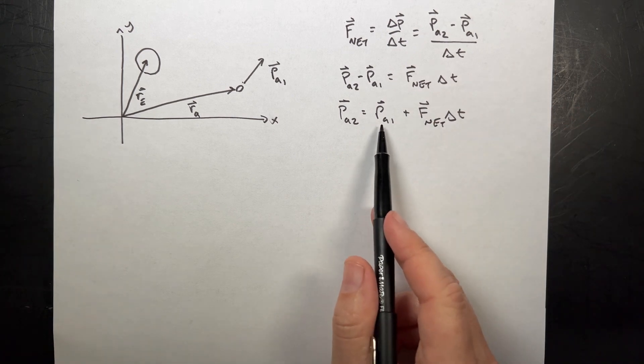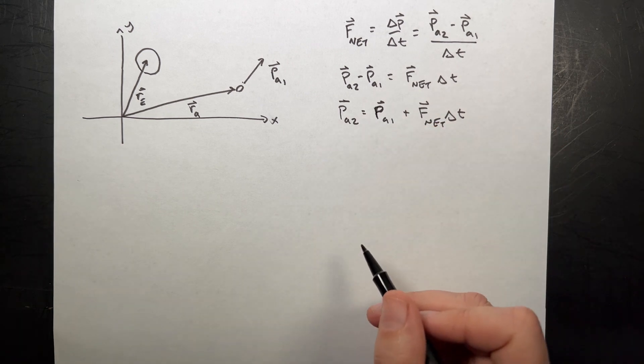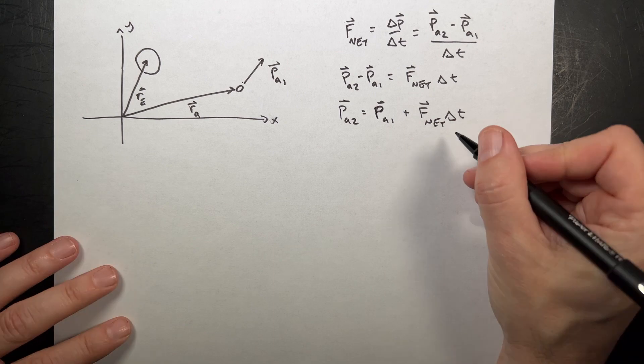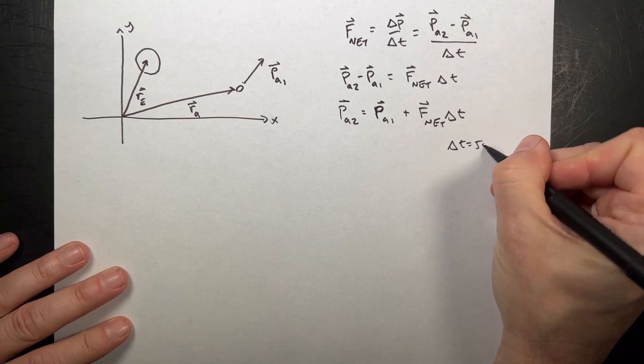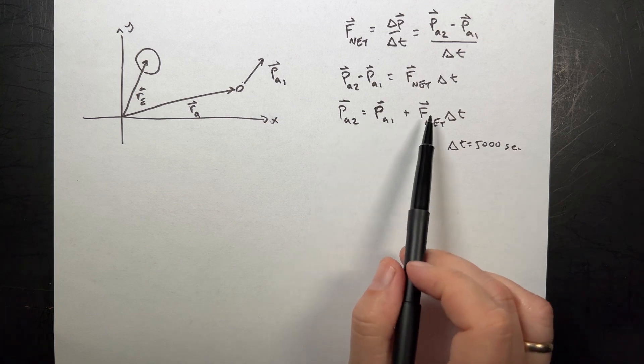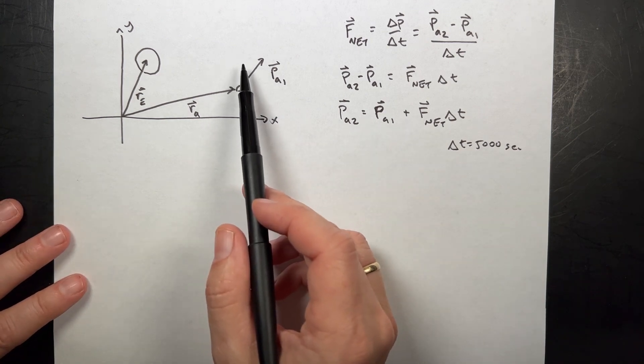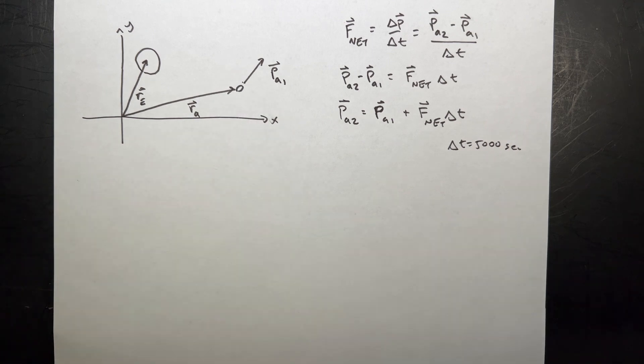So I know the momentum at time 1. I know the delta t is 5,000 seconds. And so this only works if the force is constant. So as this thing moves, it's going to change the position. It will change the force. But I don't think it's too terribly bad. It's an approximation to assume that the force is constant.